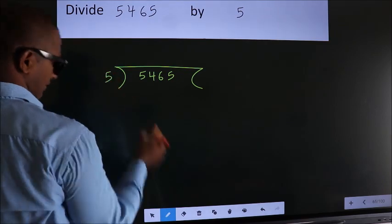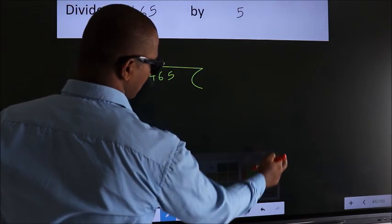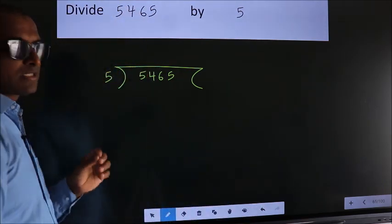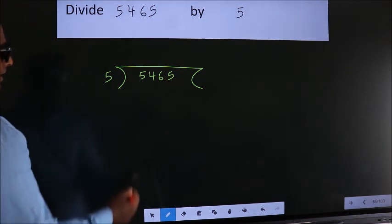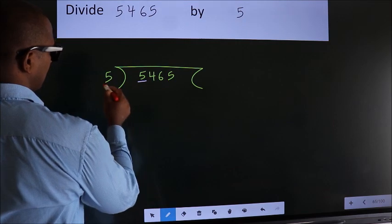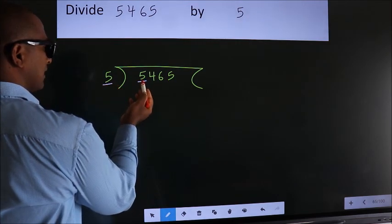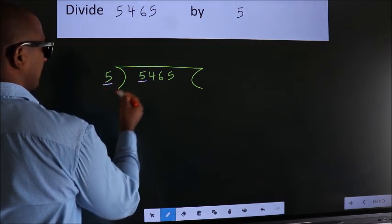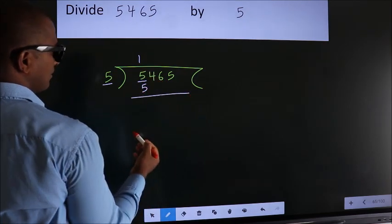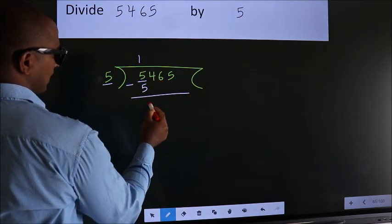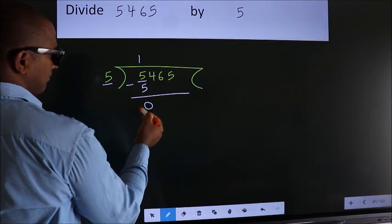5 here. This is your step 1. Next. Here we have 5. Here 5. When do we get 5? In 5 table. 5 once, 5. Now we should subtract. We get 0.